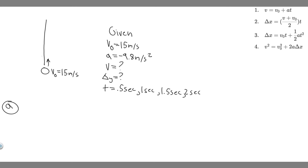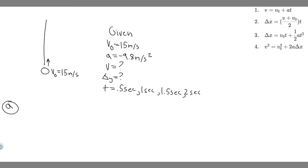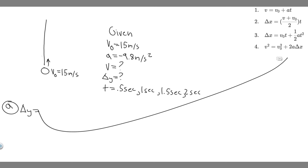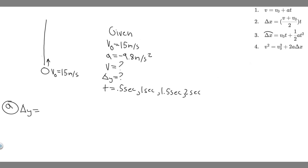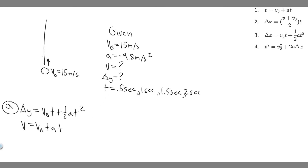Let's start with A — finding velocity and delta Y at 0.5 seconds. For displacement, the equation we'll use is delta Y equals V-sub-0 times T plus one-half A T squared, since we have v₀, a, and t. For velocity, we'll use V equals V-sub-0 plus A times T. We have the initial velocity, acceleration of minus 9.8, and the time — so all we have to do is plug in and solve.